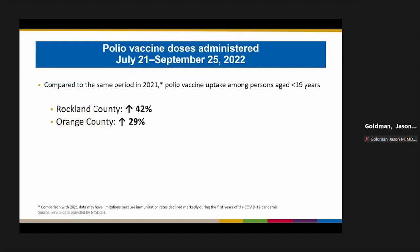New York and the affected counties have worked extremely hard to catch up and vaccinate their populations. Comparing polio vaccine doses administered from July 21st — when the case was first reported in the media — through September 25th versus the same period in 2021: polio vaccine uptake among children increased 42% in Rockland County and 29% in Orange County. Still work to be done, but progress is being made.